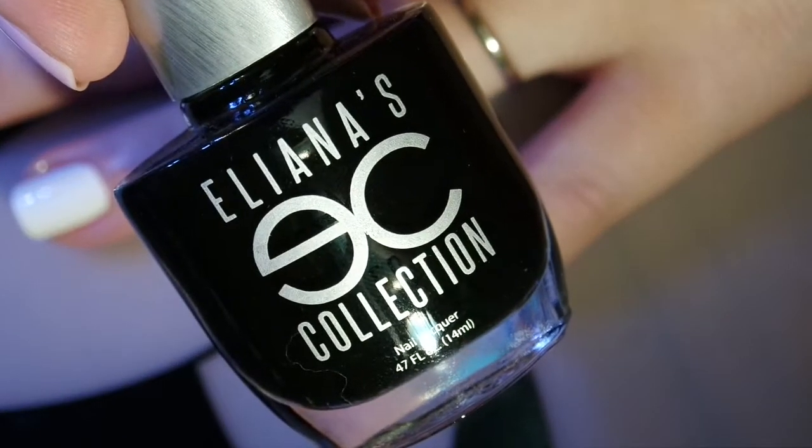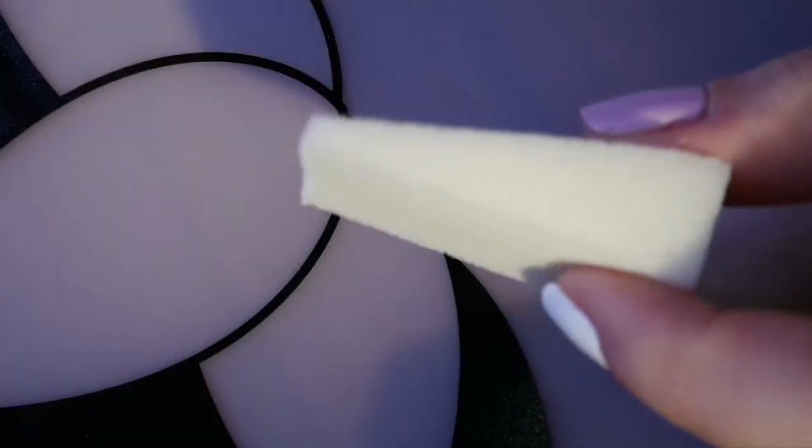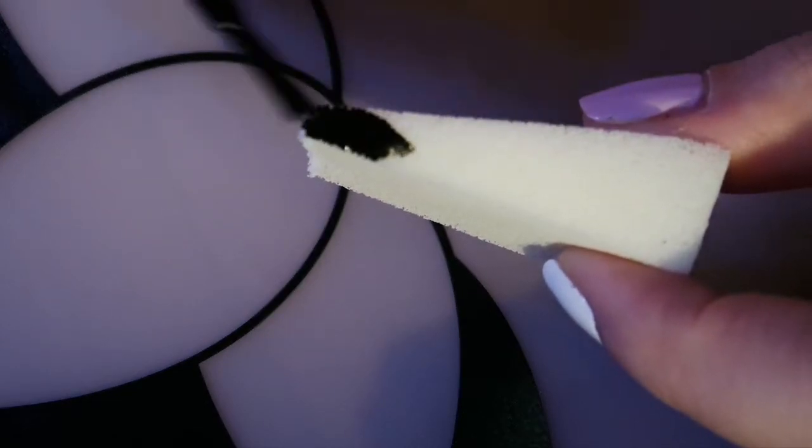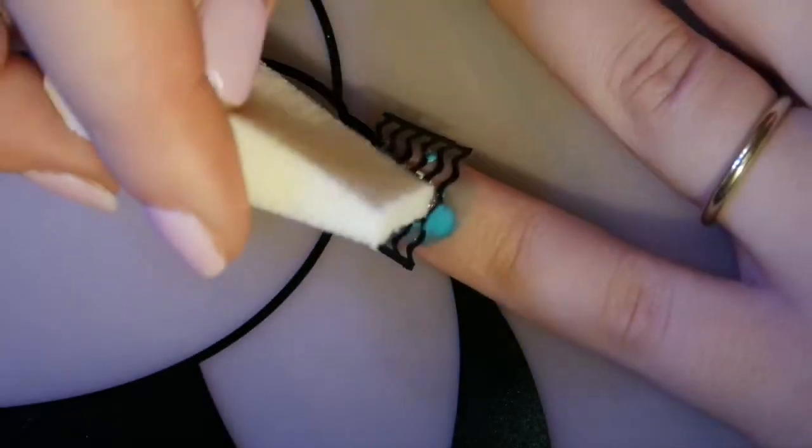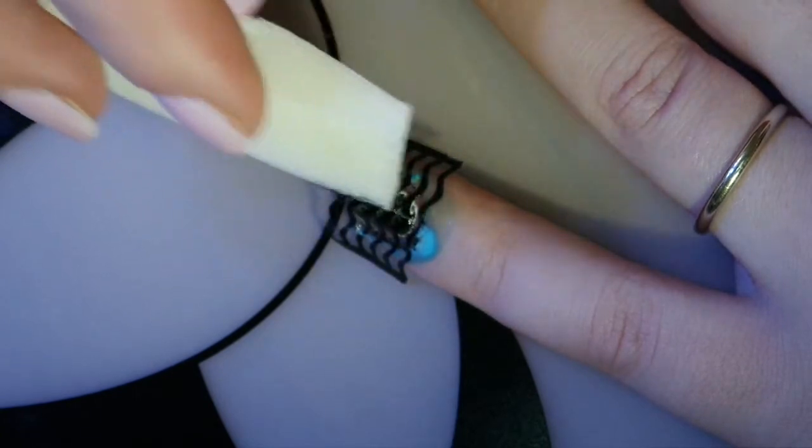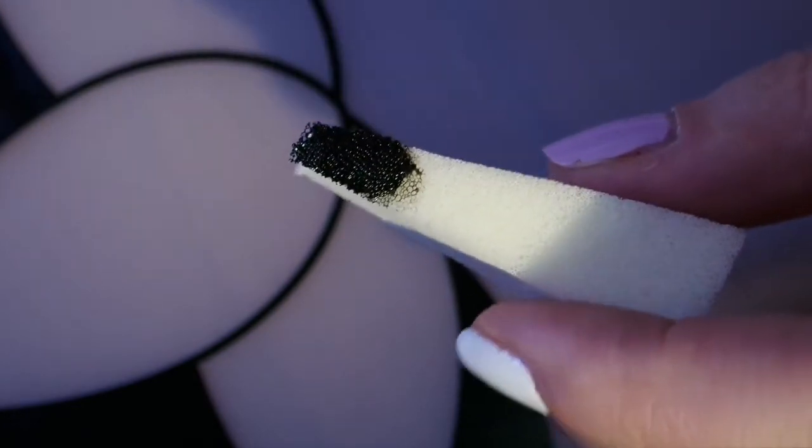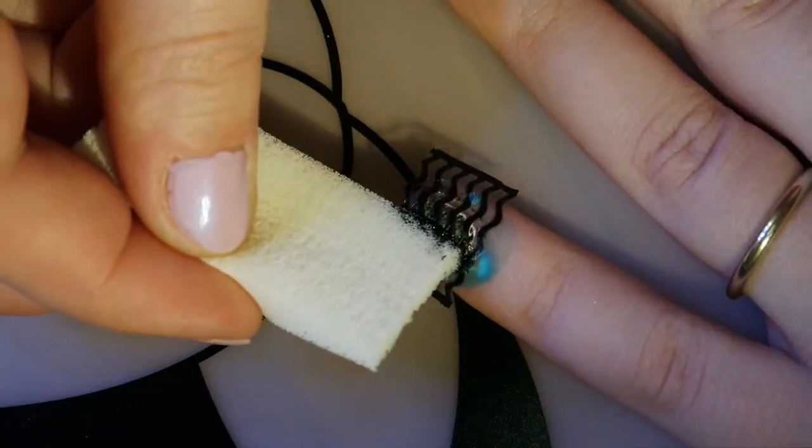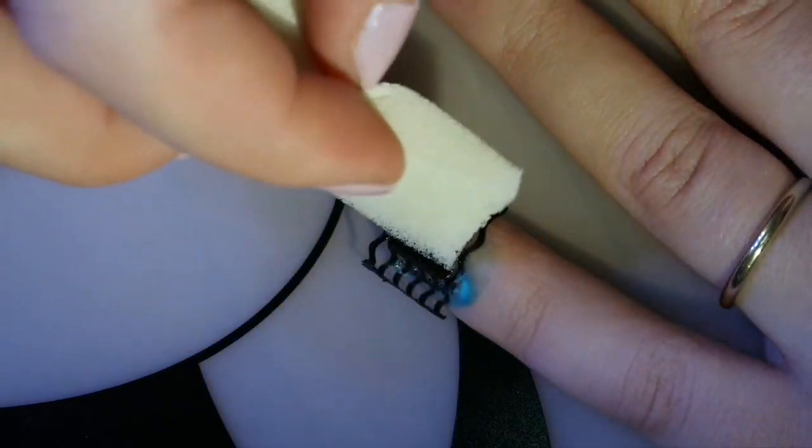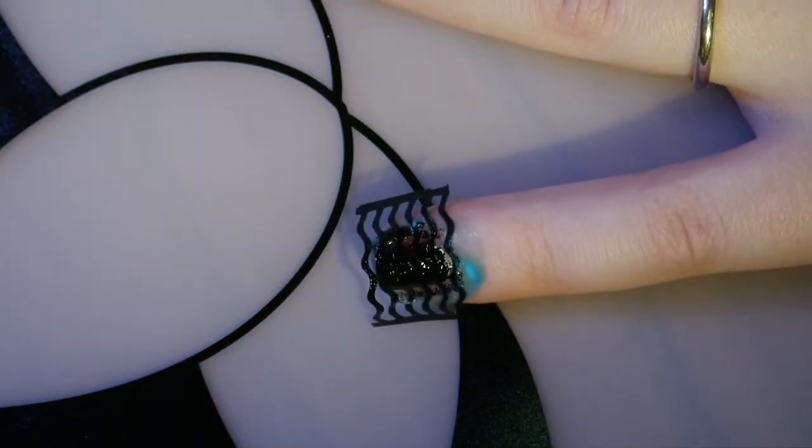I like this smurf blue color. I will be using Eliana's collection in Everlasting. And I will apply a generous amount on the sponge. And I dab it on my nail. Just take your sponge. Apply the polish. Apply it on your nails. And now I will peel it off.